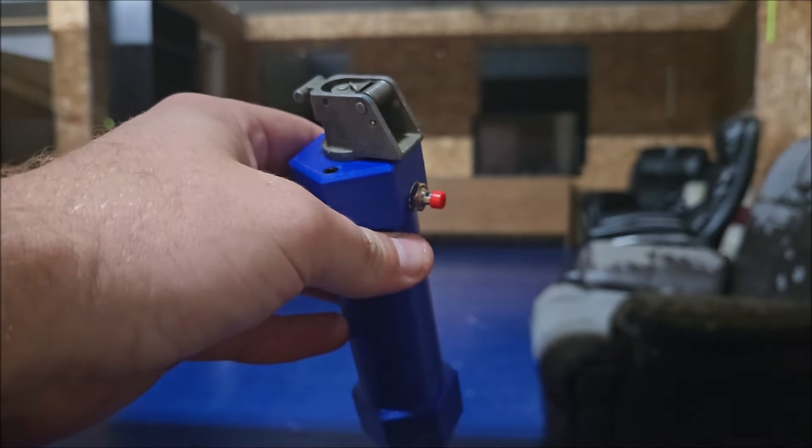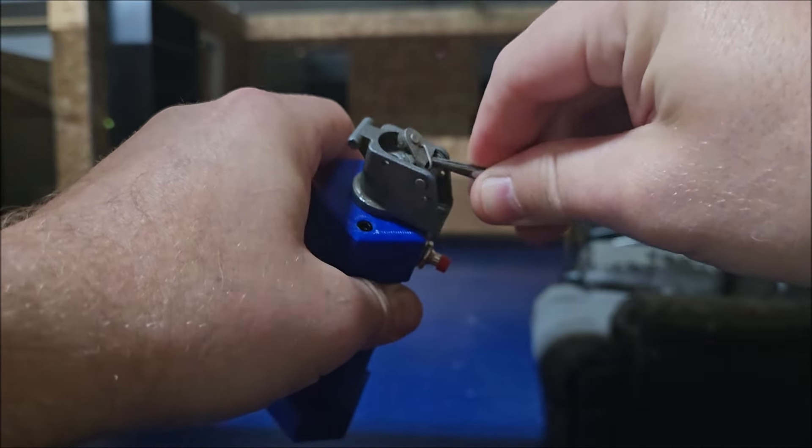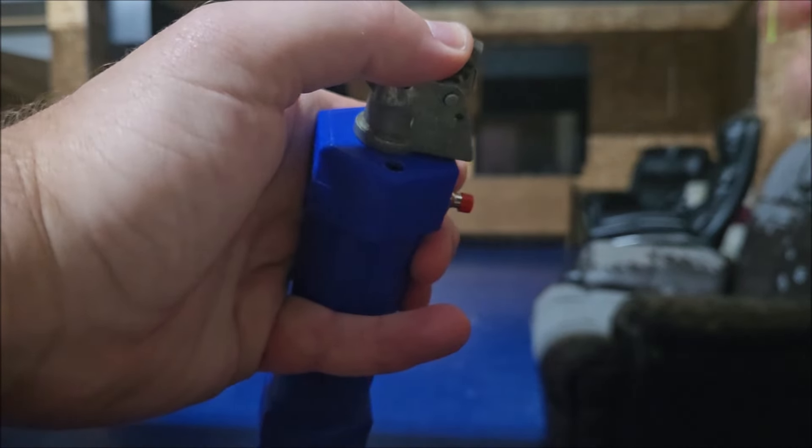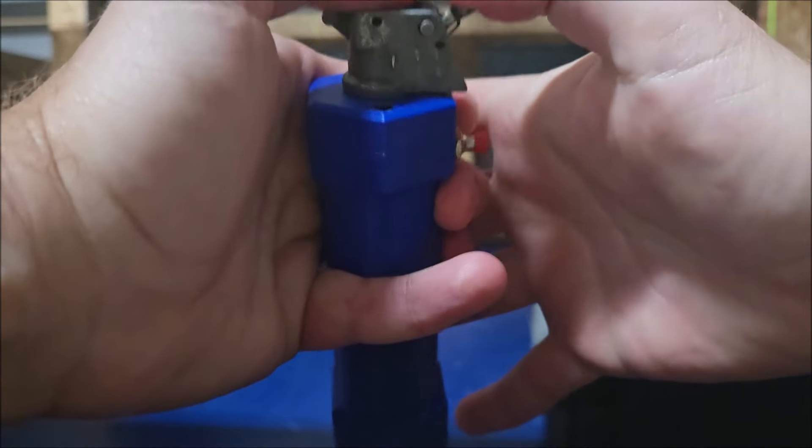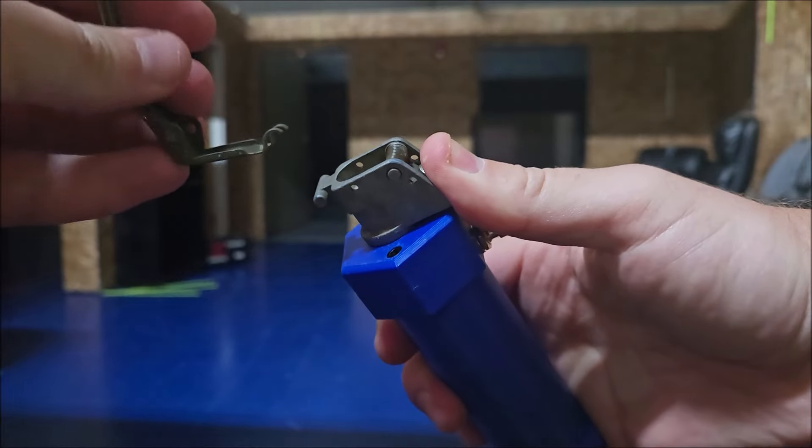You're going to take your small flat head tool. Place that in the area between the spring and the fuse head. Pull back. Hold that all the way back with your thumb like so. It's going to be under a lot of tension so you want to make sure you're holding that pretty tight there.